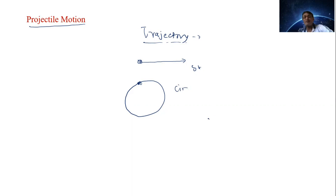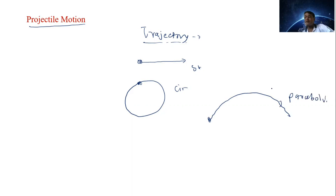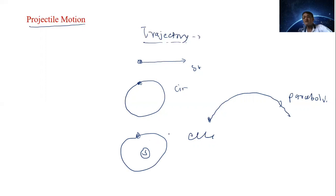Consider a cricket ball hit by the bat — how does it follow its path? The path is like this: it is a parabolic trajectory. You also know the elliptical trajectory. The Earth revolves around the Sun in an elliptical manner. These are the various types of trajectories we have seen here.